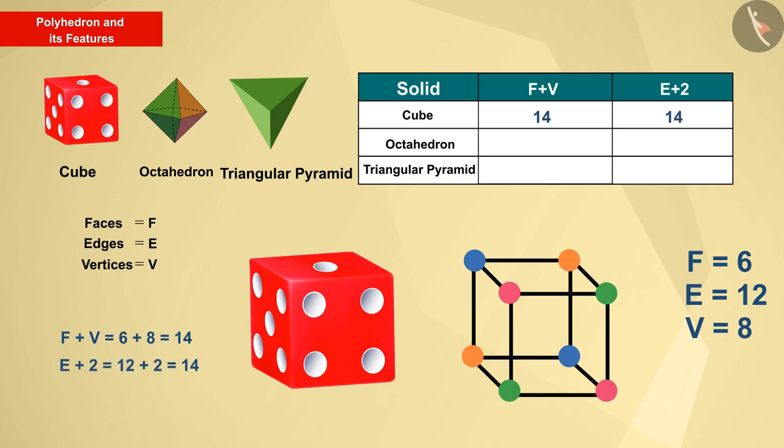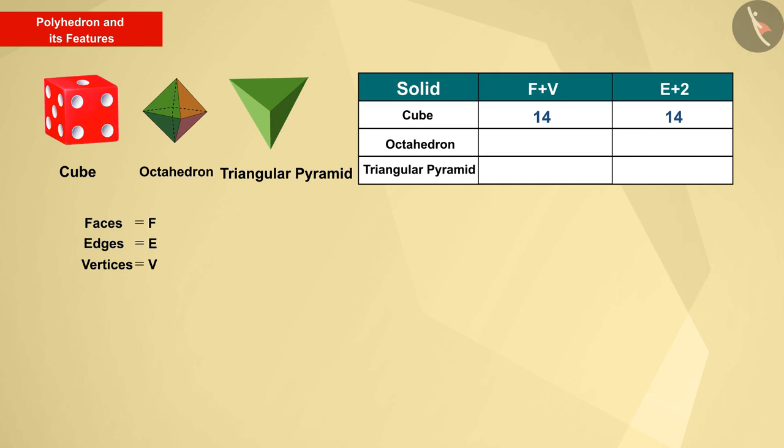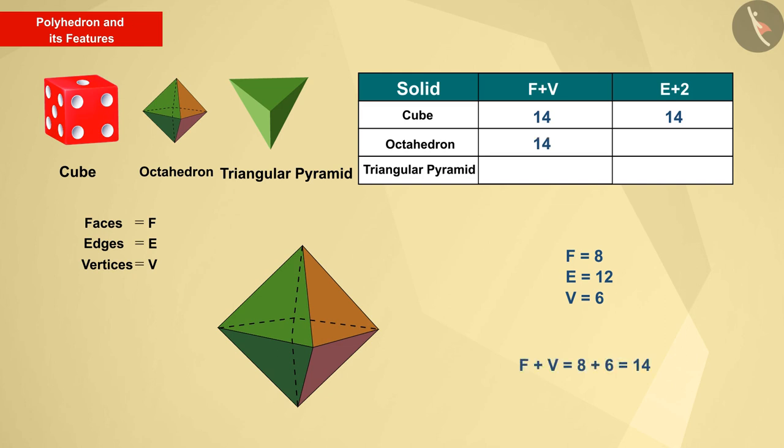Let us now look at the octahedron. As we can see, the octahedron has eight faces, 12 edges and six vertices. Here also we can see that the sum of F and V is 14 and the sum of E and 2 is also 14.